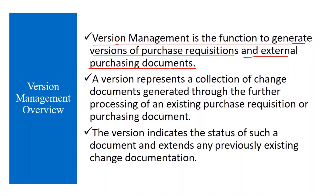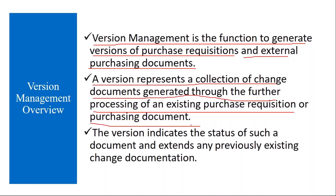Suppose a concerned department created a purchase requisition for a quantity of 200 with a requirement date of one week. That purchase requisition goes to the purchasing department. The purchasing officer checks with the vendor, and the vendor says he cannot deliver in one week — only after one month. So you ask the department to change the requested delivery date. Due to various reasons, purchasing documents will undergo changes, and if you want to track those changes, you use version management.